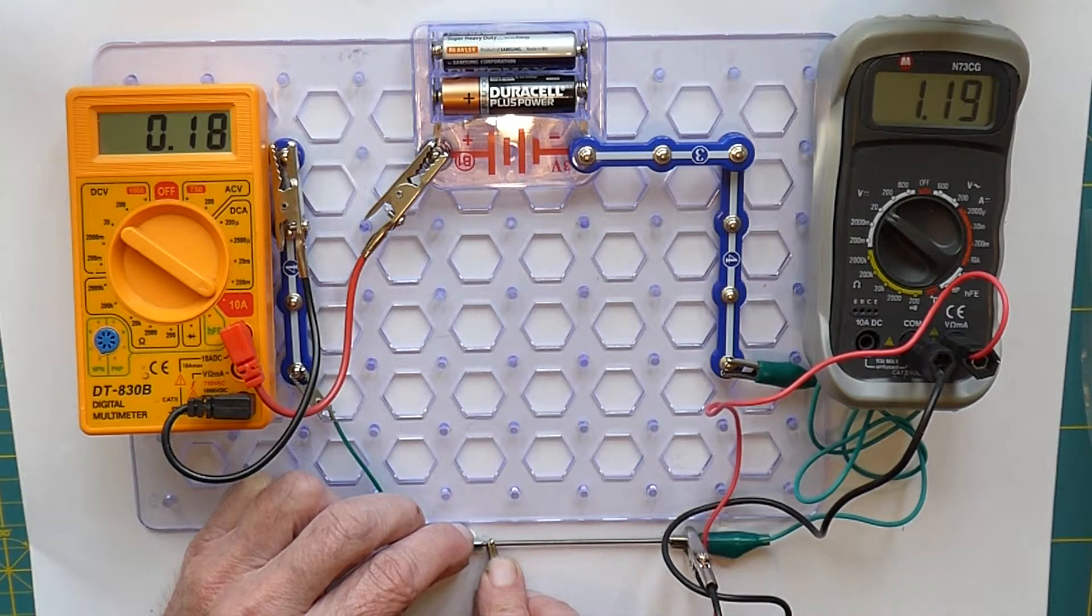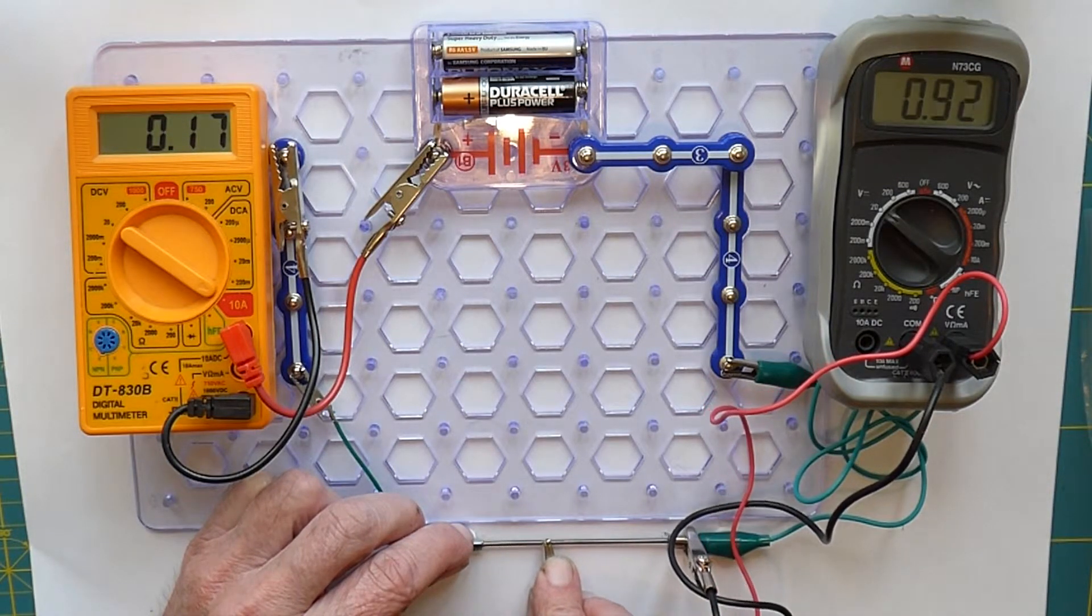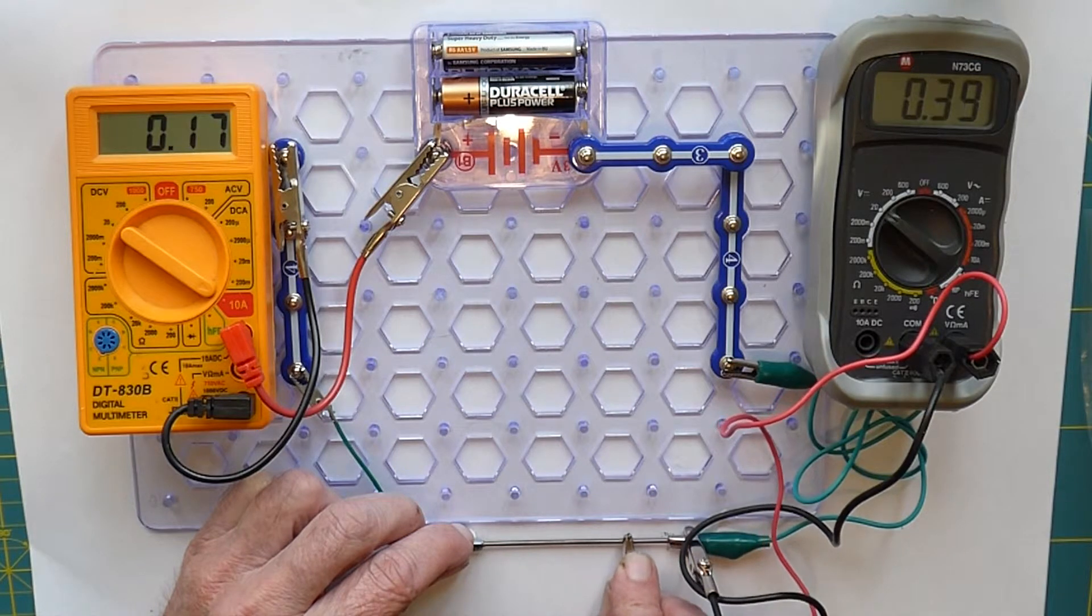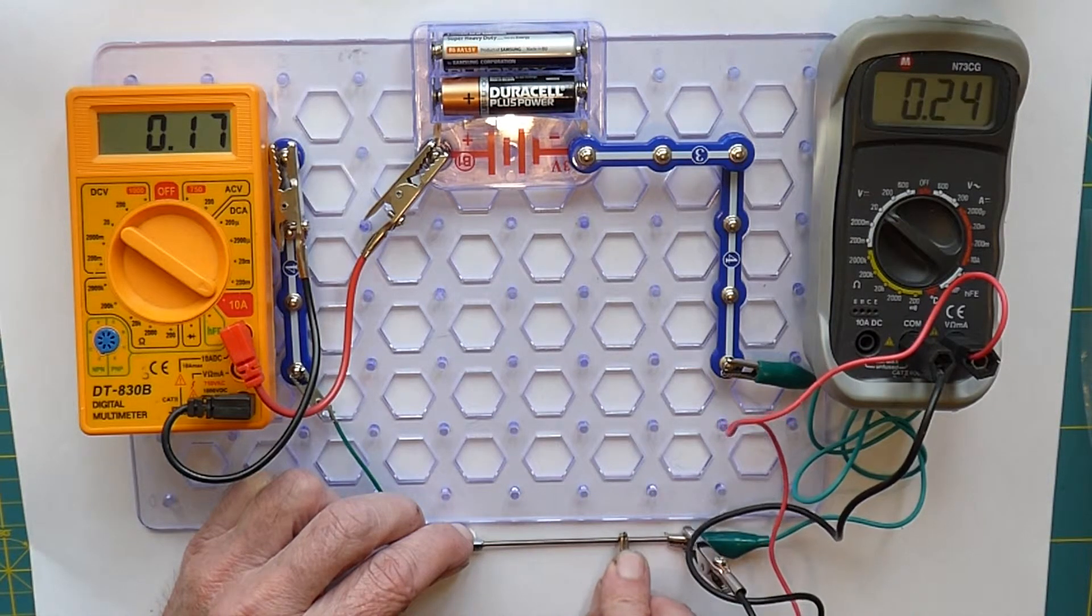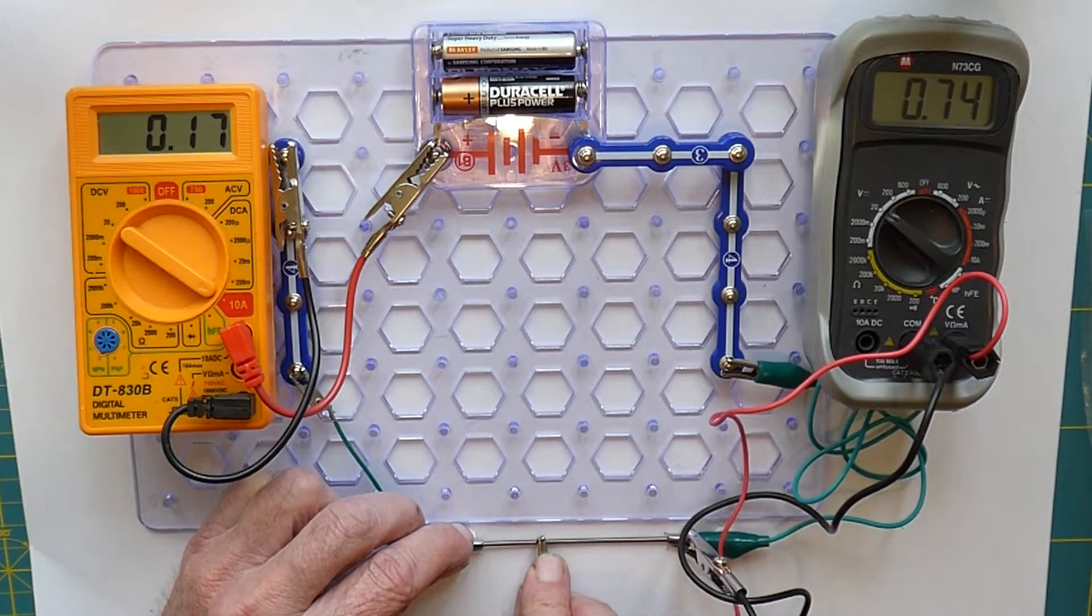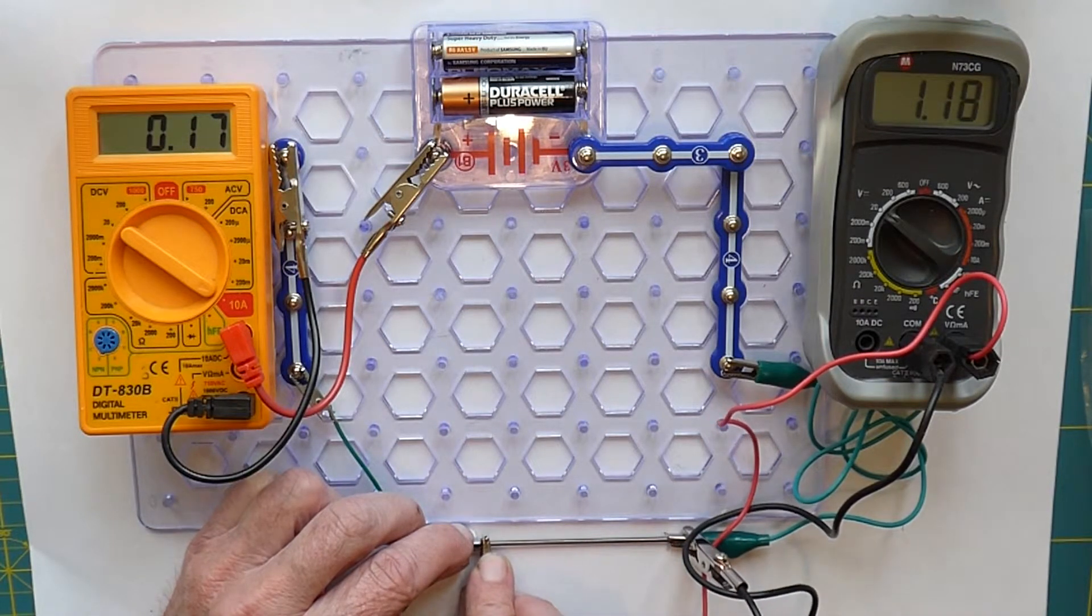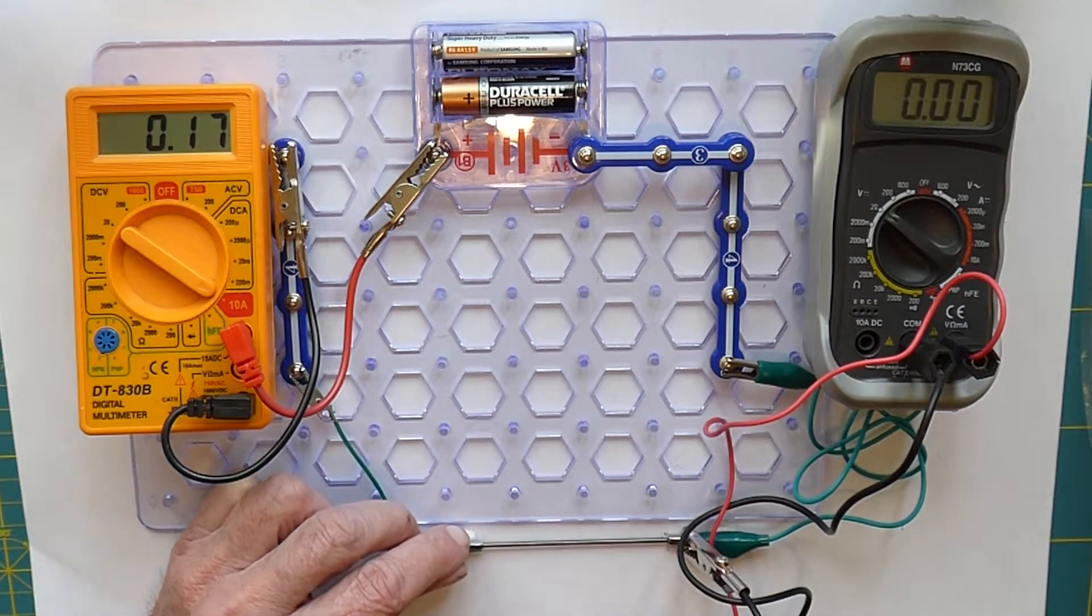And you can see as I move the slide along the pencil lead and back again, the voltage changes. It could be adjusted at any value from zero up to the maximum supplied by the dry cells.